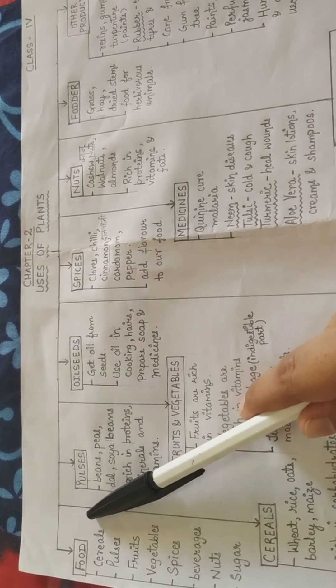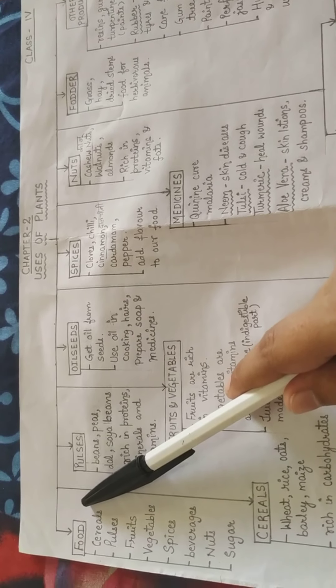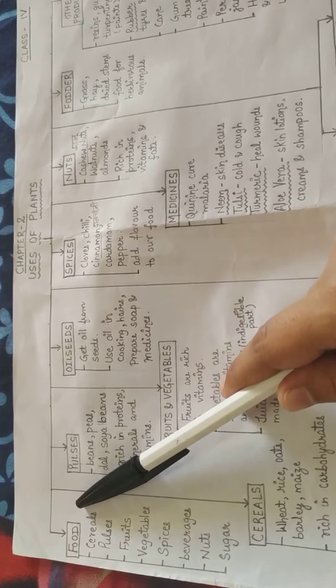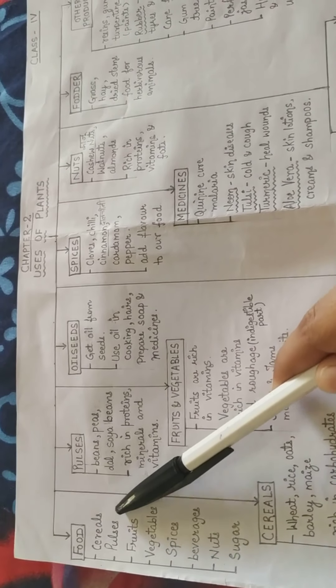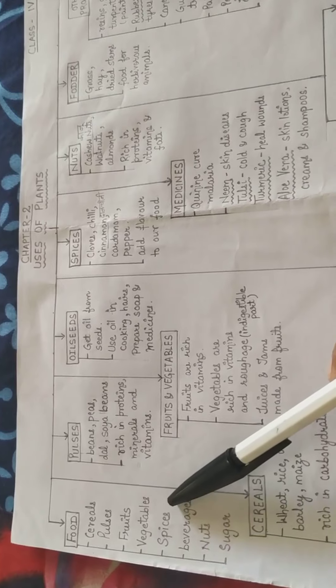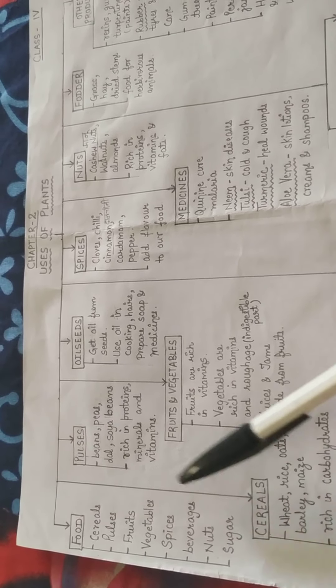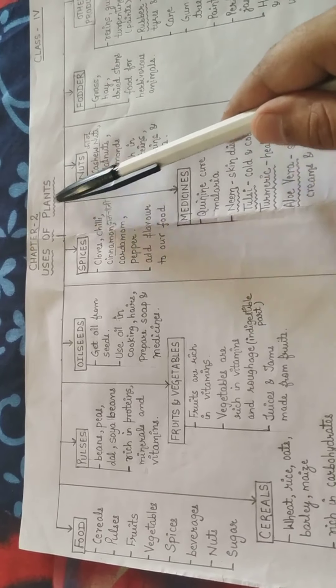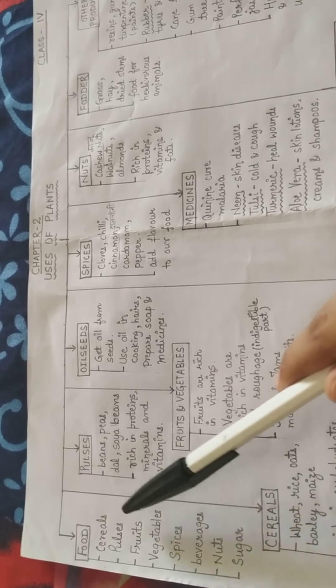First — food. Plants provide food for human beings and animals. We get cereals, pulses, fruits, vegetables, spices, beverages, nuts, and sugar from plants. We will discuss each one in detail.